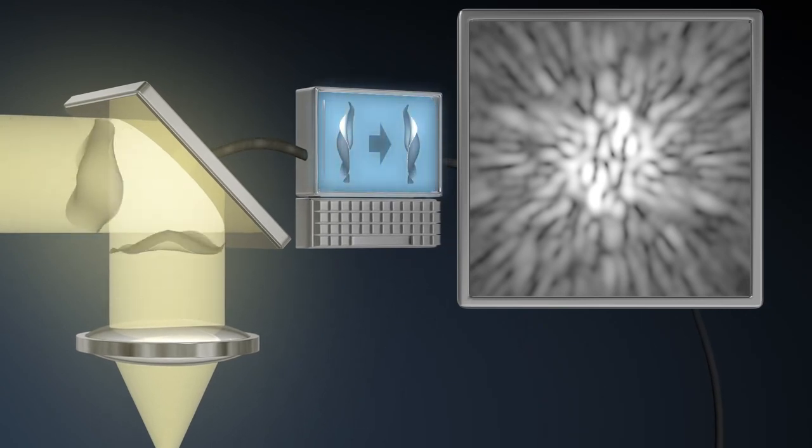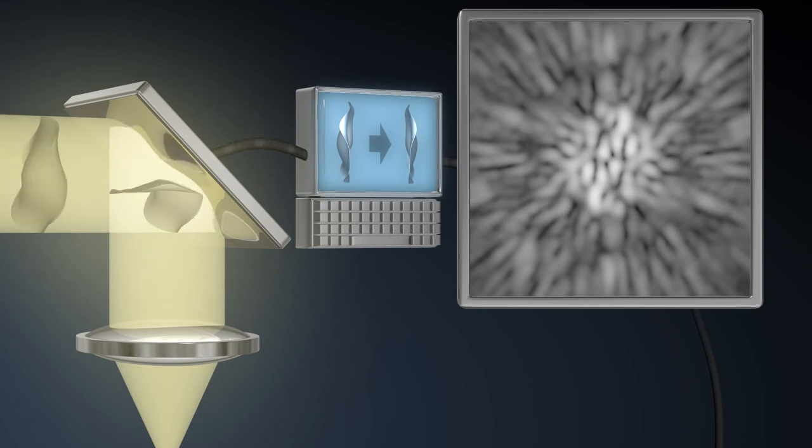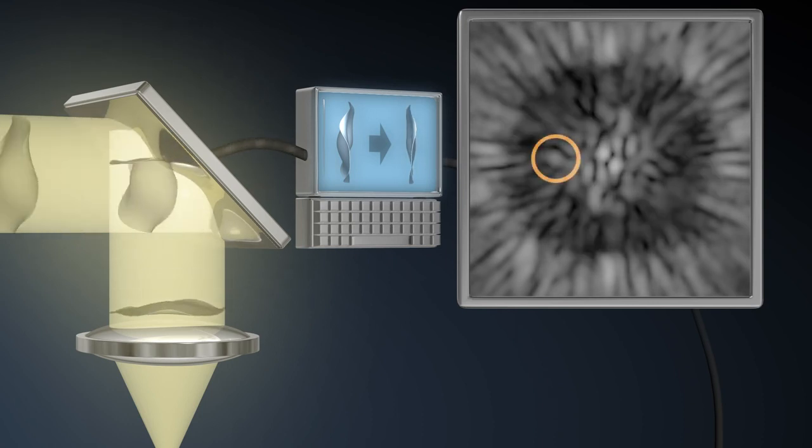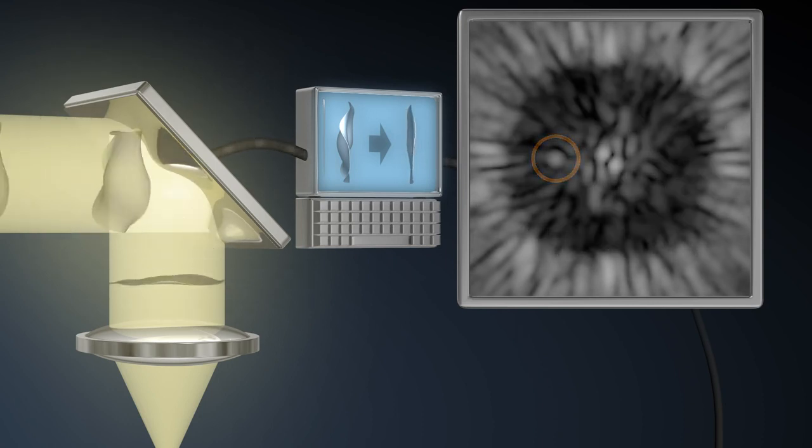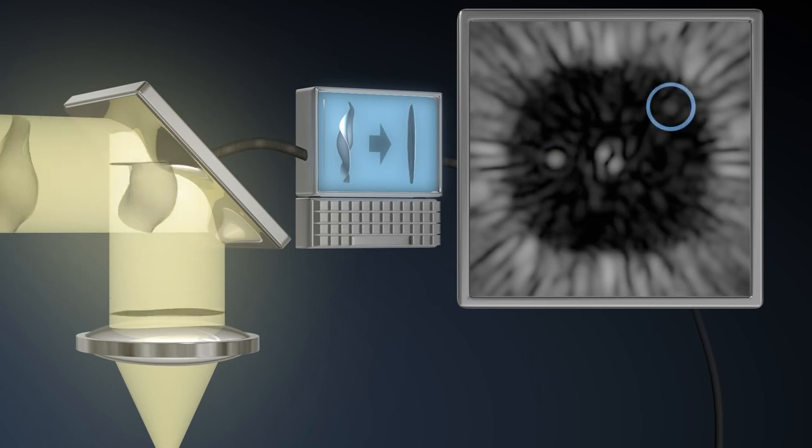As the mirror deforms, the blobs of light as seen in the monitor slowly begin disappearing, finally revealing the brighter of the two planets. Afterwards, the fainter planet also comes into view.